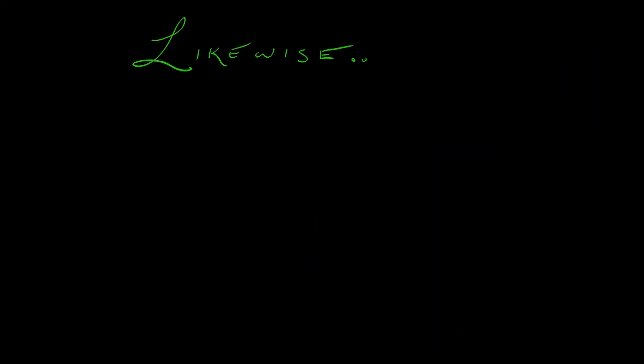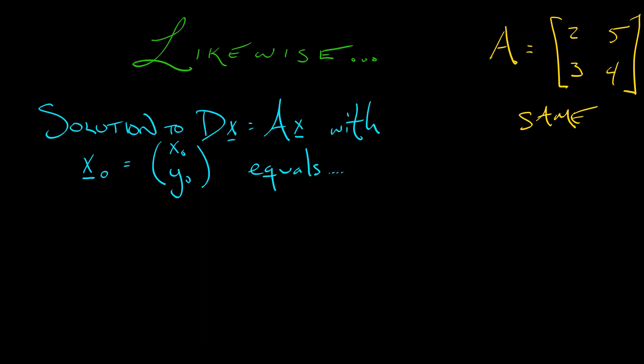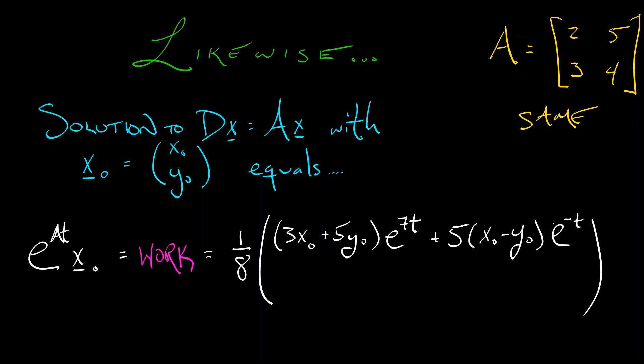And once you've done that, it's super easy to turn around and solve the continuous time system. dx equals ax. Again, with the same initial condition, what do we do? We exponentiate this matrix. We compute e to the at multiplied by x0. A little bit of work following the same pattern. We're going to get, I've got a one eighth on the outside. The first output x of t is quantity 3x0 plus 5y0 times, and here's the difference, e to the 7t plus 5 times quantity x0 minus y0 times e to the negative t. You see the difference there? The second output is going to be much like before, quantity 3x0 plus 5y0 times e to the 7t minus 3 times quantity x0 minus y0 times e to the negative t.